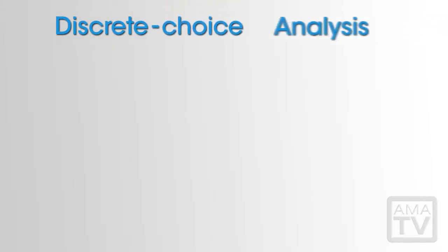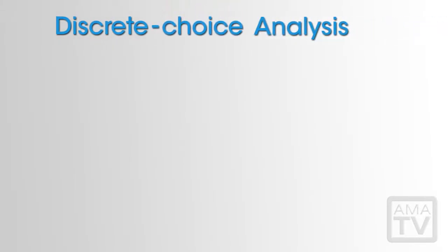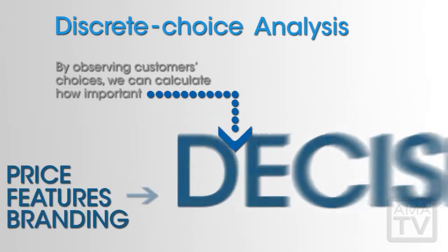It's called discrete choice analysis. By observing customers' choices, we can calculate how important price, features, branding, or other product attributes are to the decision to buy.